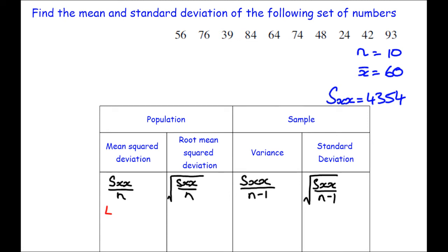The mean squared deviation, 4,354 divided by 10. Wouldn't even need a calculator here, 435.4.